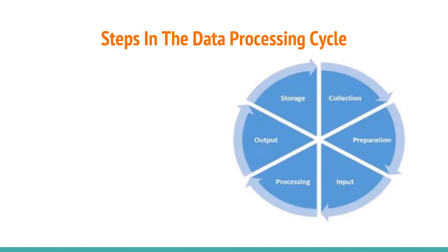The data processing cycle is broken down into six simple steps: collection, preparation, input, processing, output and storage.